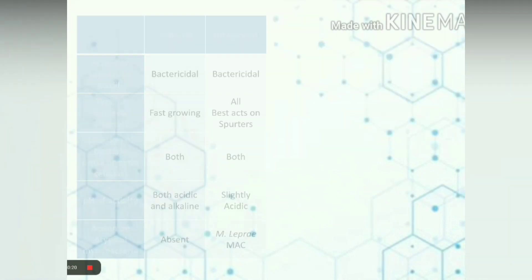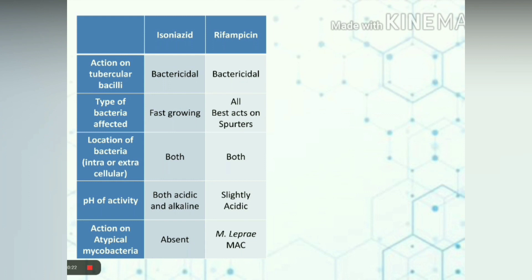The next drug is rifampicin. Rifampicin is bactericidal in action. It affects all types of bacteria but specifically acts on sporals. It kills bacteria present both intracellularly and extracellularly, and it acts in slightly acidic medium. It also kills bacteria such as Mycobacterium leprae and Mycobacterium avium complex.